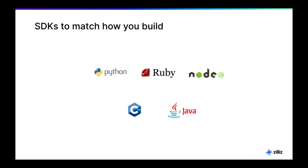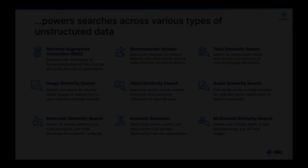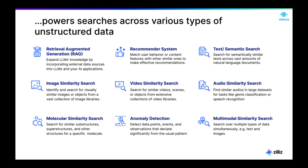Milvus SDKs are designed with cross-language compatibility in mind. Whether you're coding in Python, Java, Go, C Sharp, or Ruby, we've got you covered. This ensures flexibility and accessibility for developers working with diverse tech stacks. And all these features help you build the most powerful AI applications.